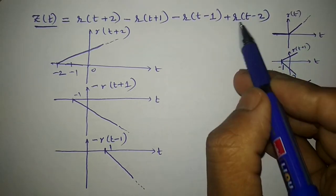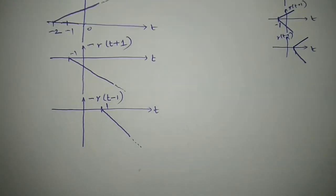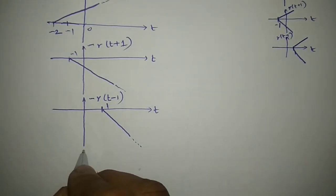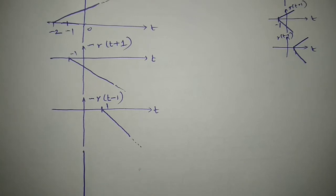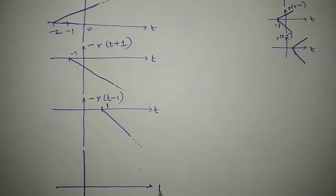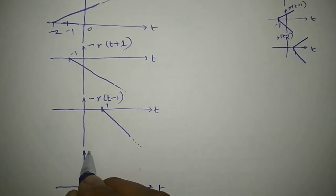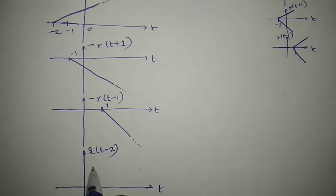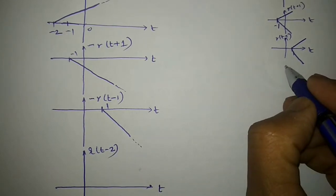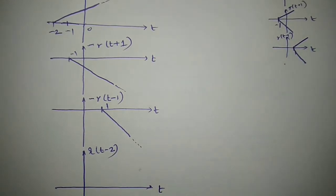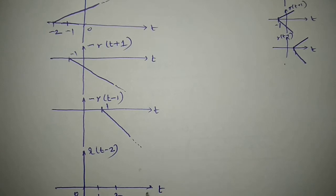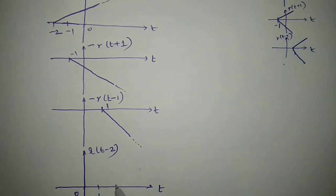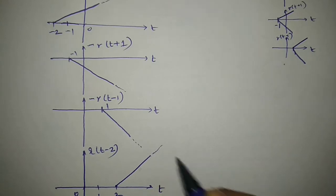Finally, I am left with the last signal R(t-2). How does R(t-2) look like? The signal has been shifted to the right by 2 units. This is how the signal looks like.